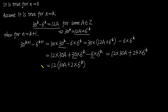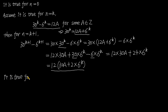So from this we know that 30 to the power of k plus 1 minus 6 to the power of k plus 1 is also divisible by 12. So it is true for n equals k plus 1.